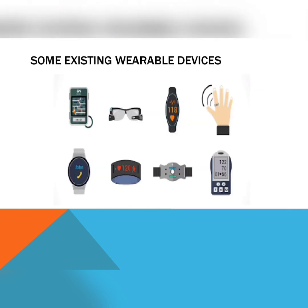Some existing wearable devices shown in the figure include a GPS tracker, Google Glass, fitness tracker, and a ring used to detect left-right location based on finger rotation. Also shown are smartwatches, fitness bands, belts, gaming consoles, and calculators. In today's digital world, the term 'wearable' has a new meaning — it is no longer just conjuring images of clothing like an elegant evening dress or a heated jacket worn at Mount Everest base camp.